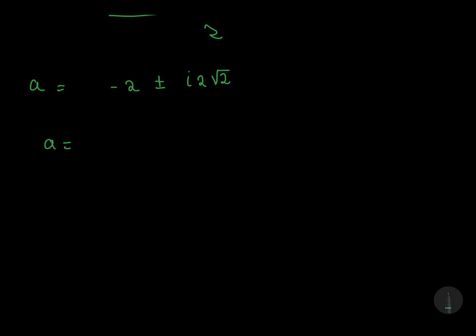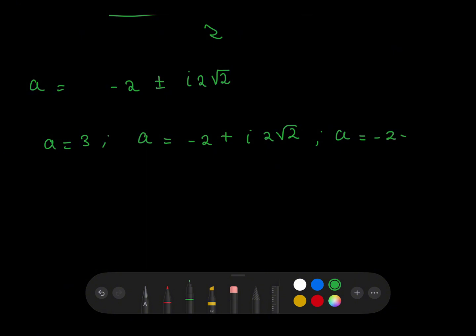So, a = 3, which we found previously, and a equals -2 + 2i√2, and -2 - 2i√2. So, we have one real root and two complex roots.